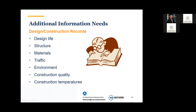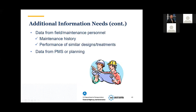Additional information needed includes design and construction records. When combined with data from the distress survey, this provides a sound basis for selecting an appropriate preventative maintenance treatment. It is also useful to work directly with field construction and maintenance staff to develop a sense of the maintenance history of various projects. Reviewing the pavement management system or planning data can help identify the most appropriate and effective schedule of preventative maintenance.